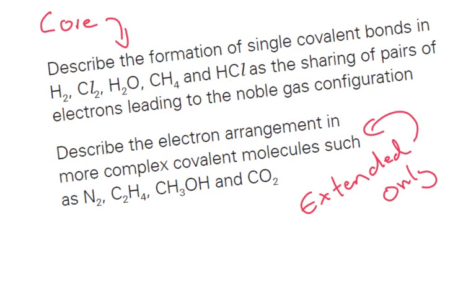Hi guys, today I want to go through the dot-cross diagrams that you're expected to know for the Cambridge physical science and chemistry syllabuses. Now the core—if you're taking only core in the syllabus—it says describe the formation of single covalent bonds in hydrogen, chlorine, water, methane, and hydrogen chloride as the sharing of pairs of electrons leading to the noble gas configuration.